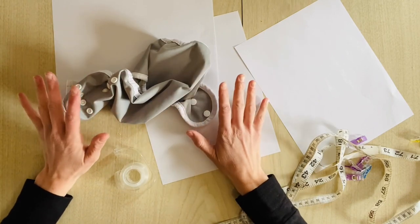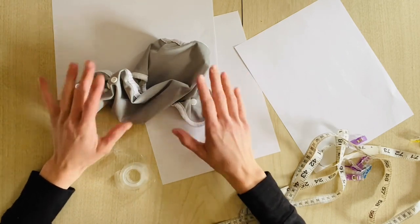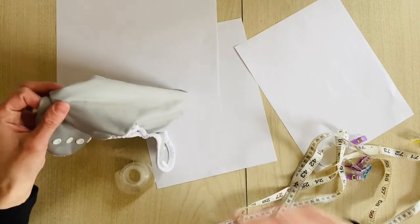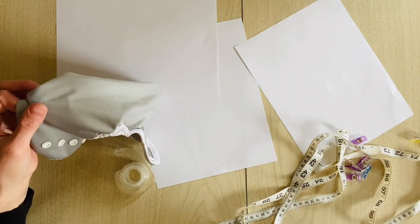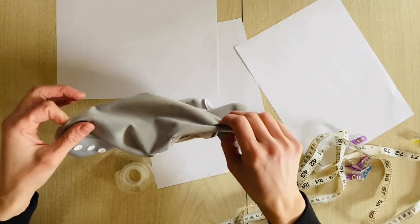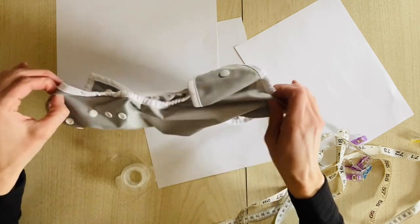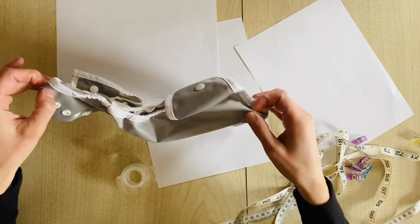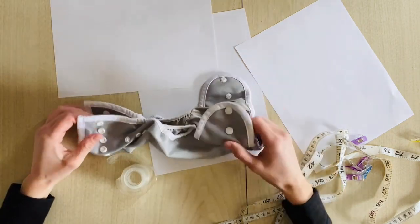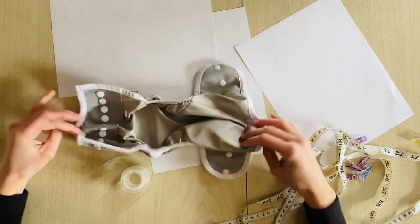Now you can use this method to trace any product, whether it be baby size like this or like an adult sized product. I'm using a baby size because it's going to be a little bit easier for the video and I happen to really like this cover and I would love to make more for JP.